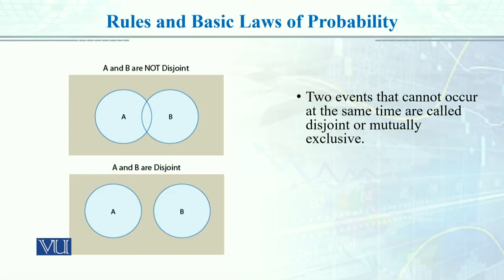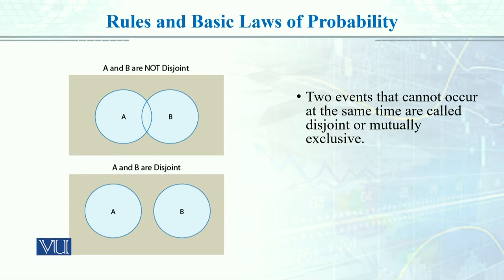In probability, there is a rule of mutually exclusive events and non-mutually exclusive events. Events that cannot occur at the same time are called disjoint or mutually exclusive events. For example, head or tail are mutually exclusive events — it will either be heads or tails. Similarly, if I roll a die with six sides, two different faces cannot occur at the same time. These are called mutually exclusive or disjoint events.